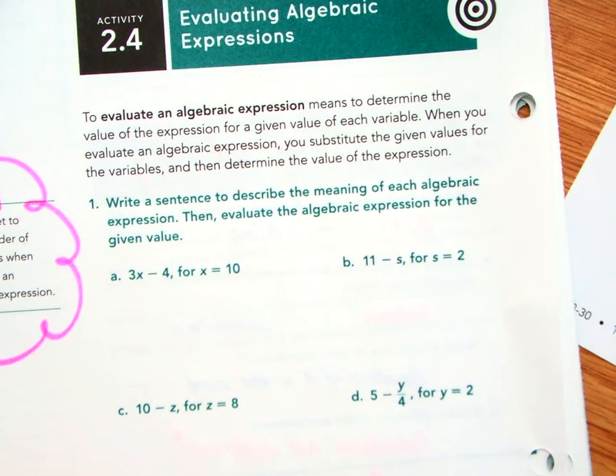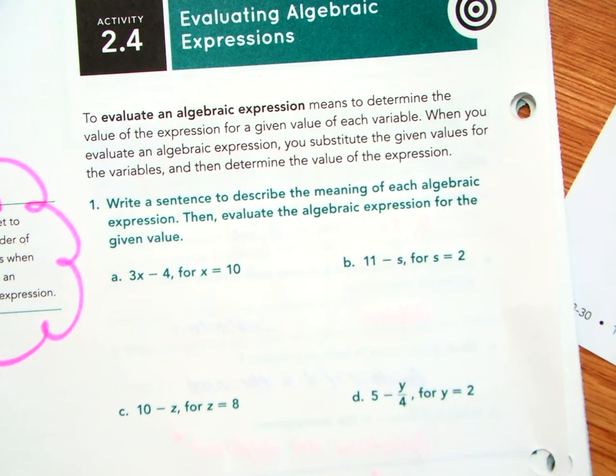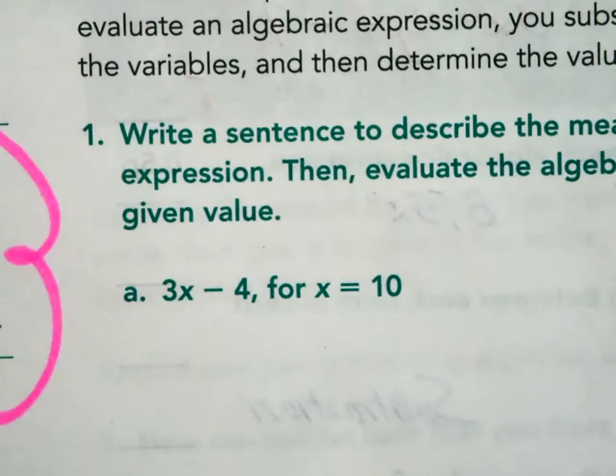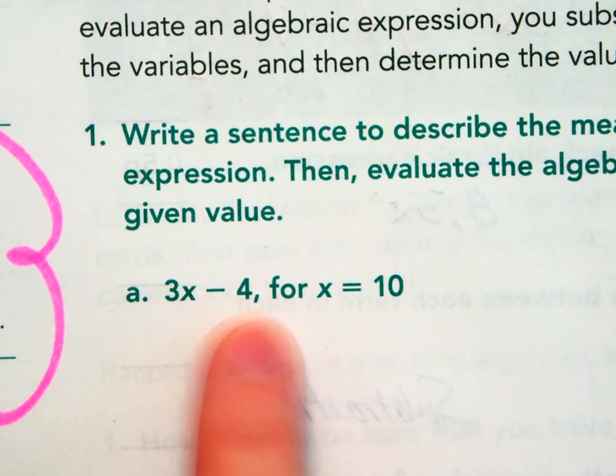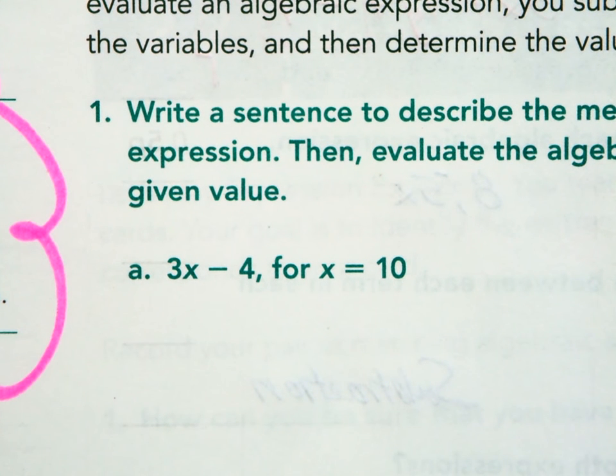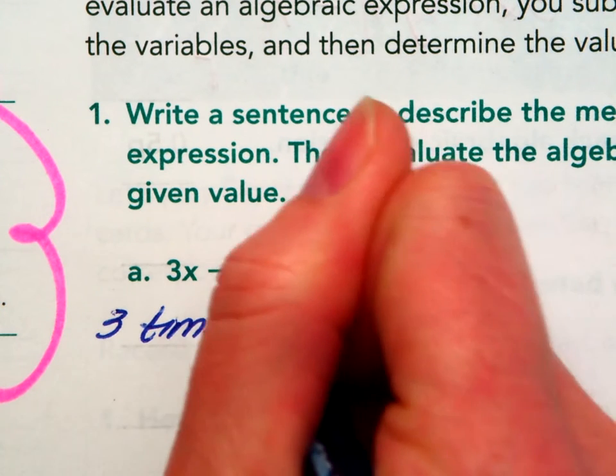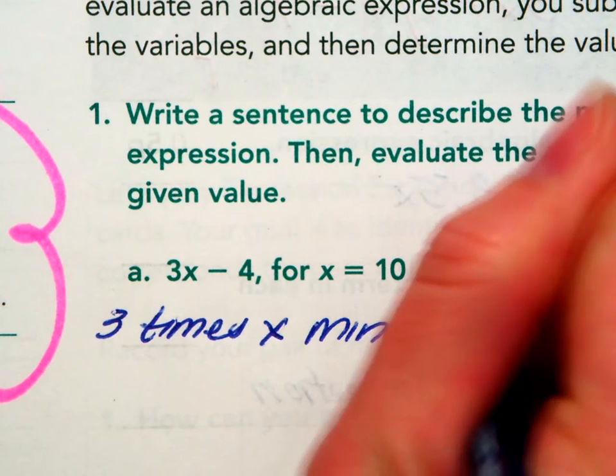Write a sentence to describe the meaning of each algebraic expression. Then evaluate the algebraic expression for the given value. What do they mean by write a sentence to describe? I think they mean, let's take a look at 1a closely together, 3 times x minus 4. 3 times a number minus 4. 4 less than 3 times a number. I mean, it's all those translations we were working on in the previous lesson. It could be anything of that nature. 3 times x minus 4. Okay, so that's part A.